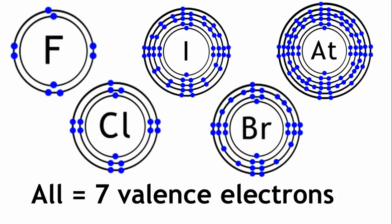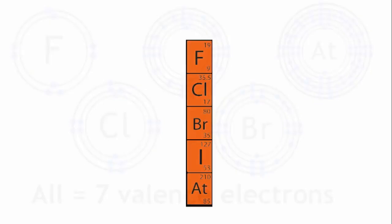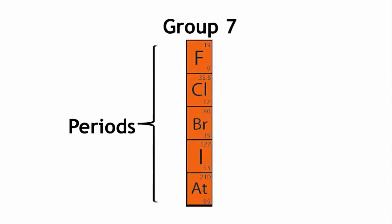The properties show a gradual change going down the group as we go from period to period. So if we look at group 7 again, we can see that they are each in a different period in the periodic table, telling us that each element in this group has its outer electrons on a different shell.